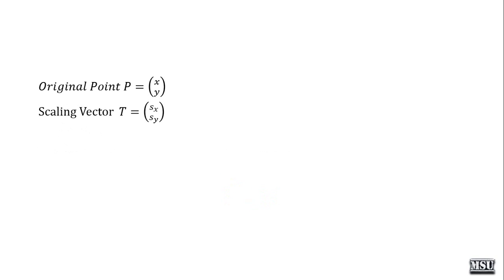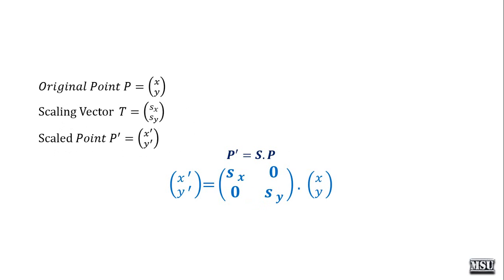The original point is X comma Y, the scaling vector is SX, SY, and the scaled point is X dash comma Y dash. This is the formula for performing scaling: P dash equals S into P. This is the matrix representation: X dash, Y dash equals the matrix [SX, 0; 0, SY] into [X; Y], which means X dash equals X into SX and Y dash equals Y into SY.